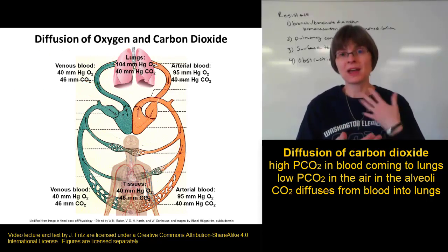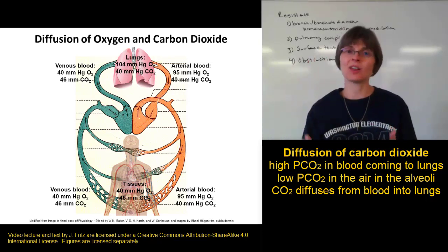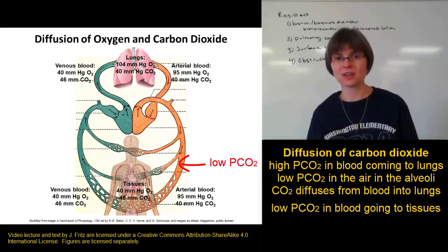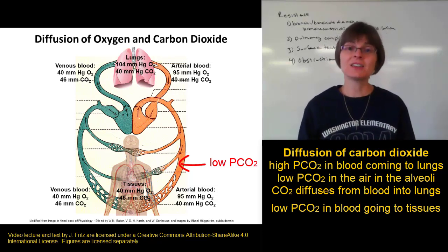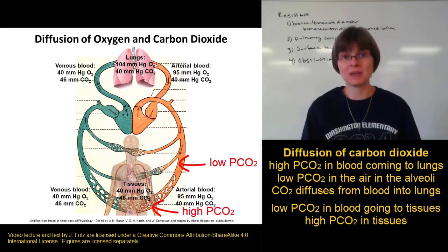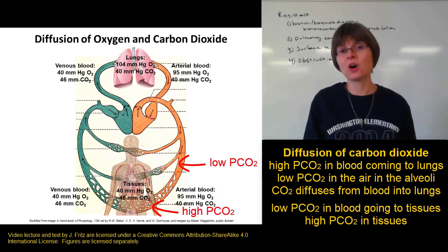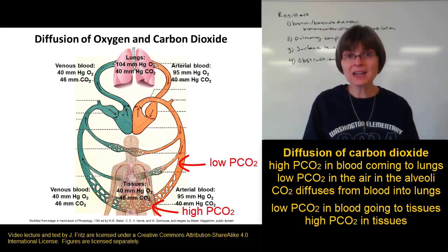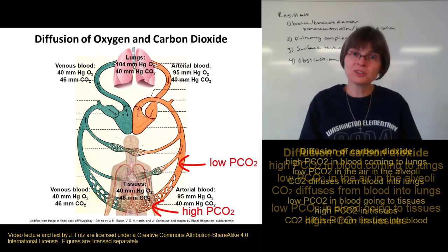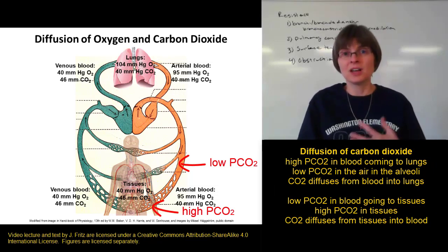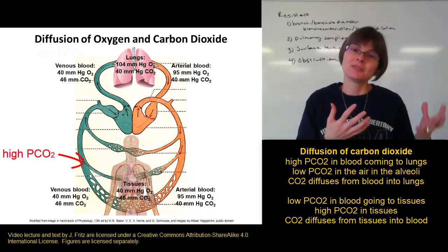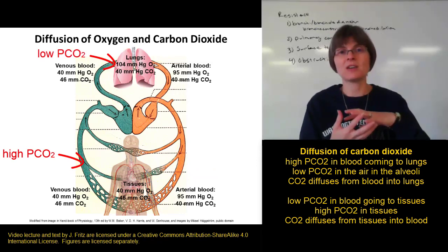As the blood unloads its carbon dioxide into the alveoli, the blood that leaves the lungs has a low concentration of carbon dioxide — high in oxygen, low in carbon dioxide. That low-CO₂ blood goes out into the tissues, which are always using oxygen and always making CO₂. If you have blood with a low concentration of CO₂ and the surrounding tissues have a high concentration, the CO₂ diffuses from the cells into the blood. That blood goes back up to the lungs, now high in CO₂, and CO₂ diffuses from the blood into the alveoli so we can breathe it out.